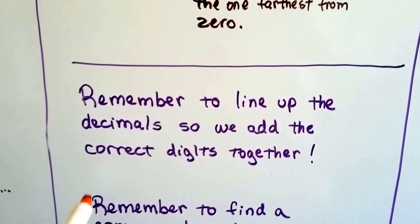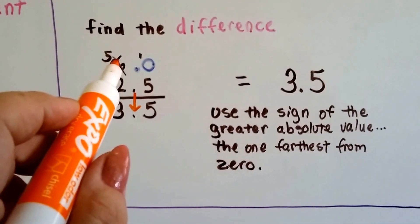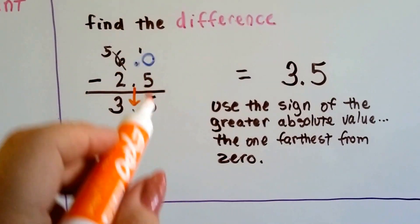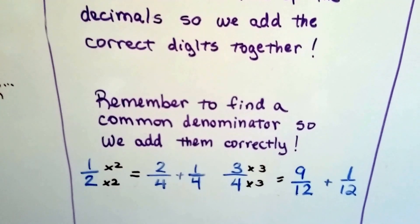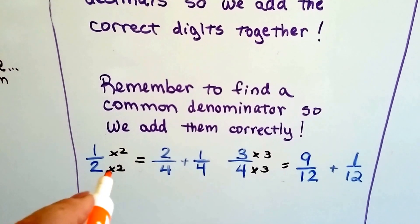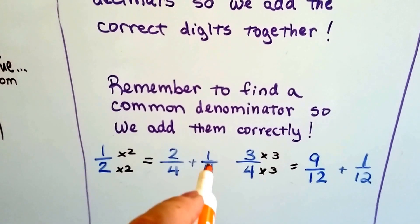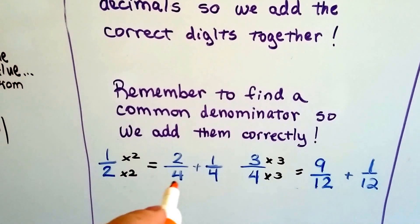So, remember to line up your decimals so we add the correct digits together. Can you imagine if you accidentally put the 6 on top of the 5 here? That would have been the wrong decimal place, right? So, also, remember to find the common denominator when adding rational numbers that are written as fractions so you add them correctly. We can't add a half to a fourth unless we turn this 2 denominator into a 4.